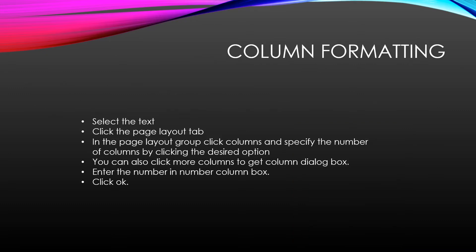For column formatting, select the text and click the Page Layout tab. In the Page Layout group, click Columns and specify the number of columns by clicking the desired option. You can also click More Columns to get the column dialog box. Enter the number in the number of columns box and click OK. In this way, your column formatting will be done.